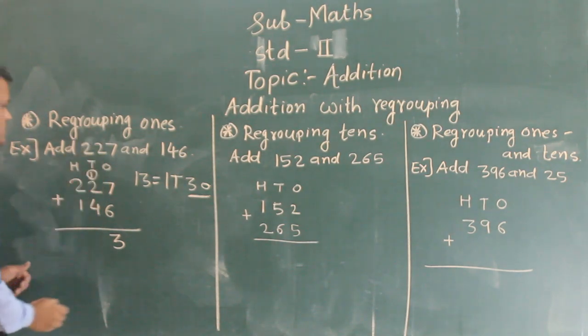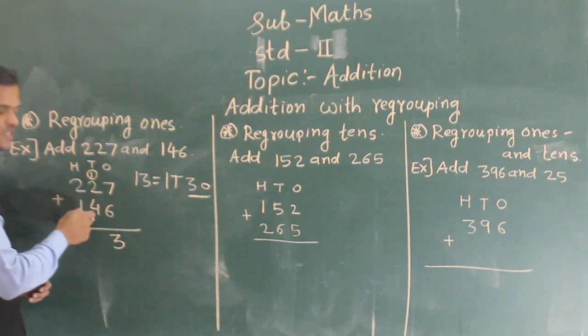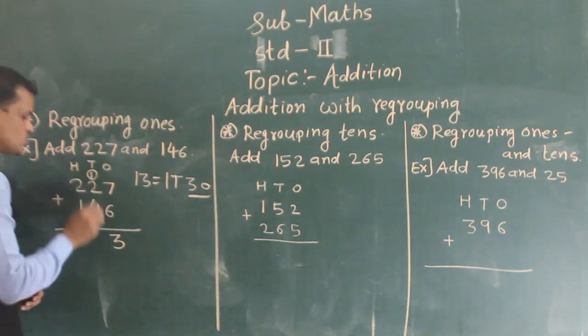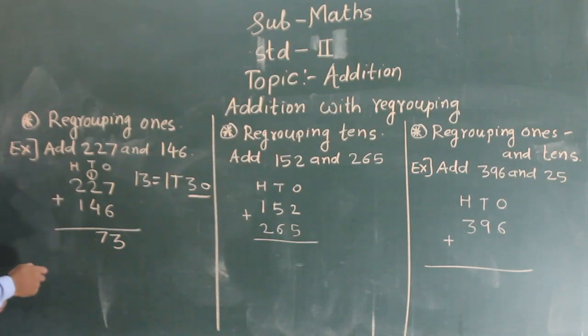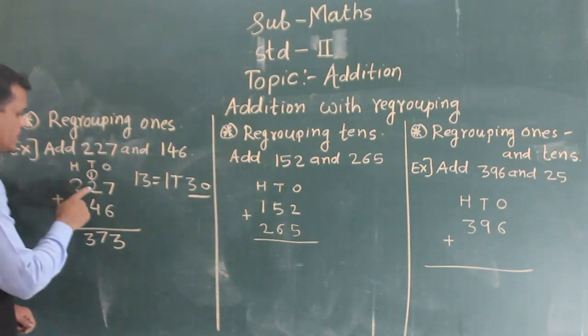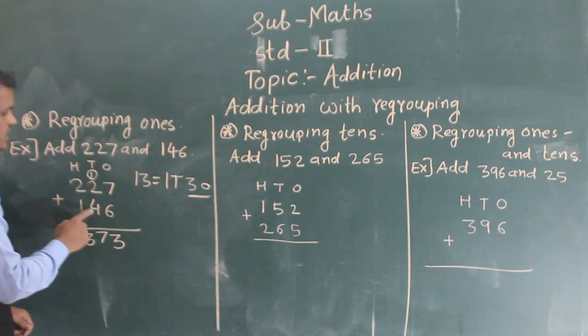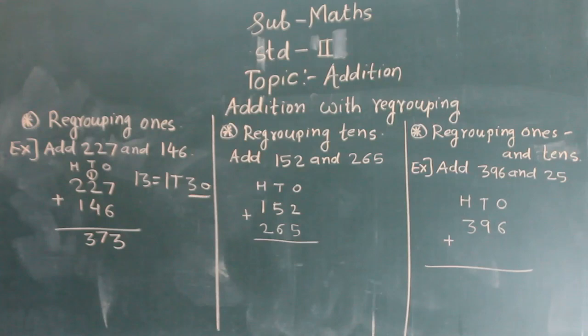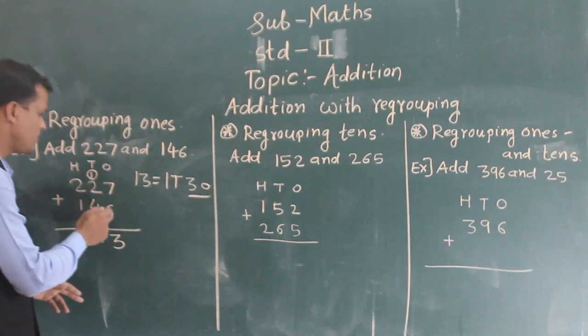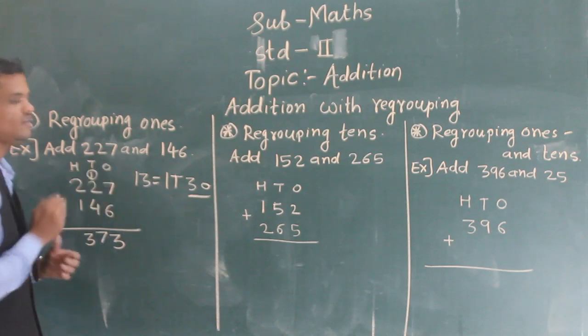Now at this column, 2 plus 4, 6 and 1 carry, so 7. Then at the 100s column, 2 plus 1, 3. So 373 is the sum of 227 and 146.